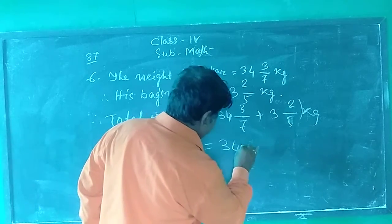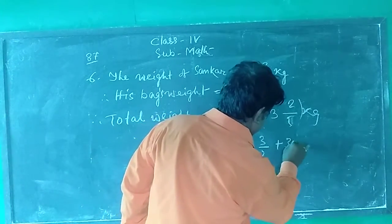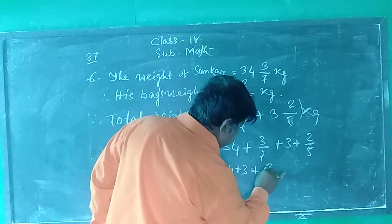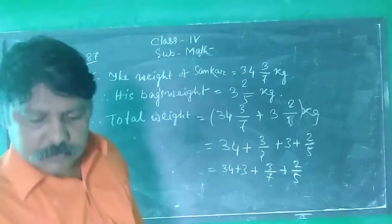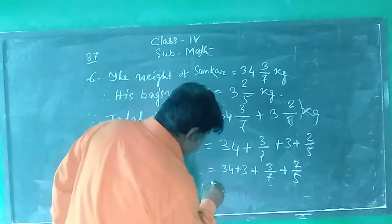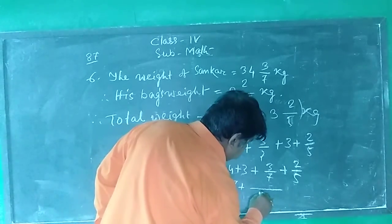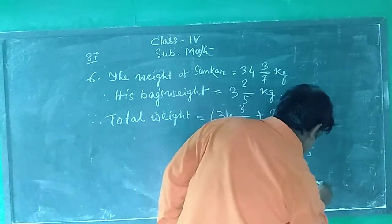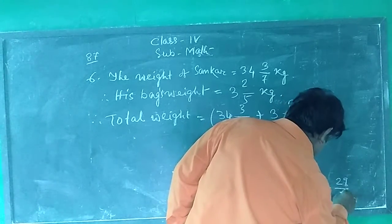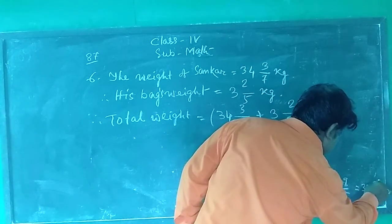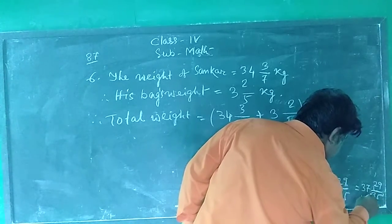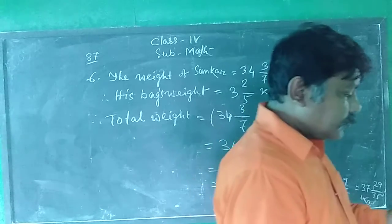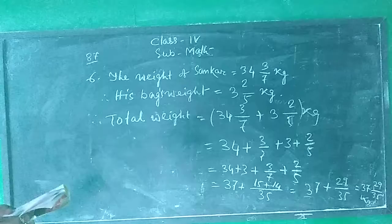Equals to 34 plus 3 by 7 plus 3 plus 2 by 5 equals to 34 plus 3 plus 3 by 7 plus 2 by 5 equals to 37 plus, LCM is 35, 15 plus 14 equals to 37 plus 29 by 35 equals to 37 whole 29 by 35 kg. Weight of Sankar and school bag is 37 whole 29 by 35 kg.